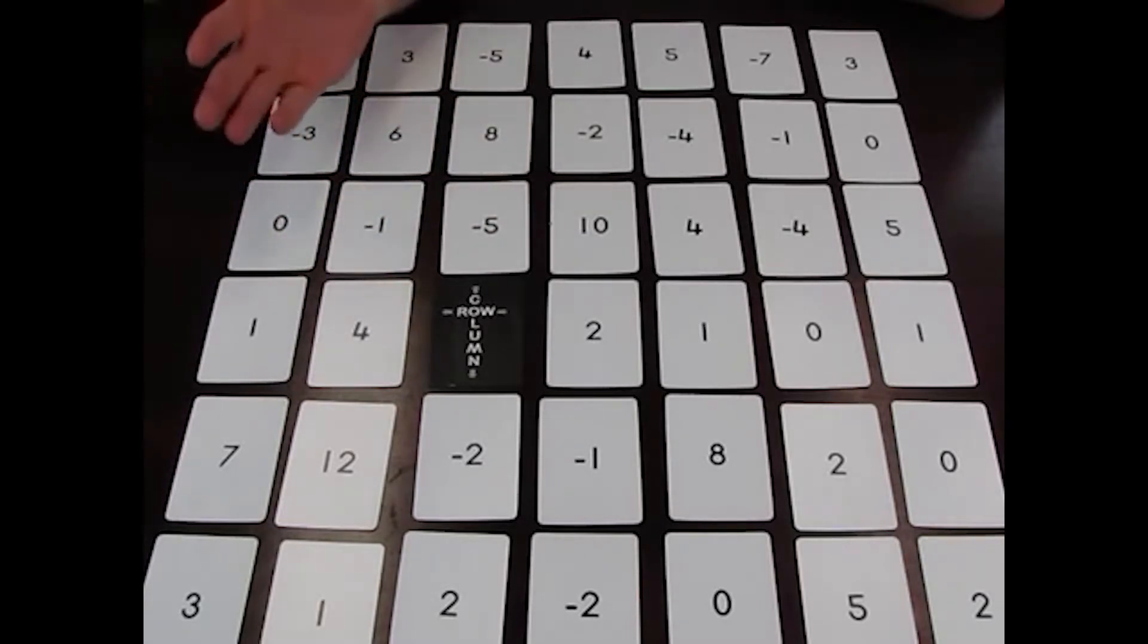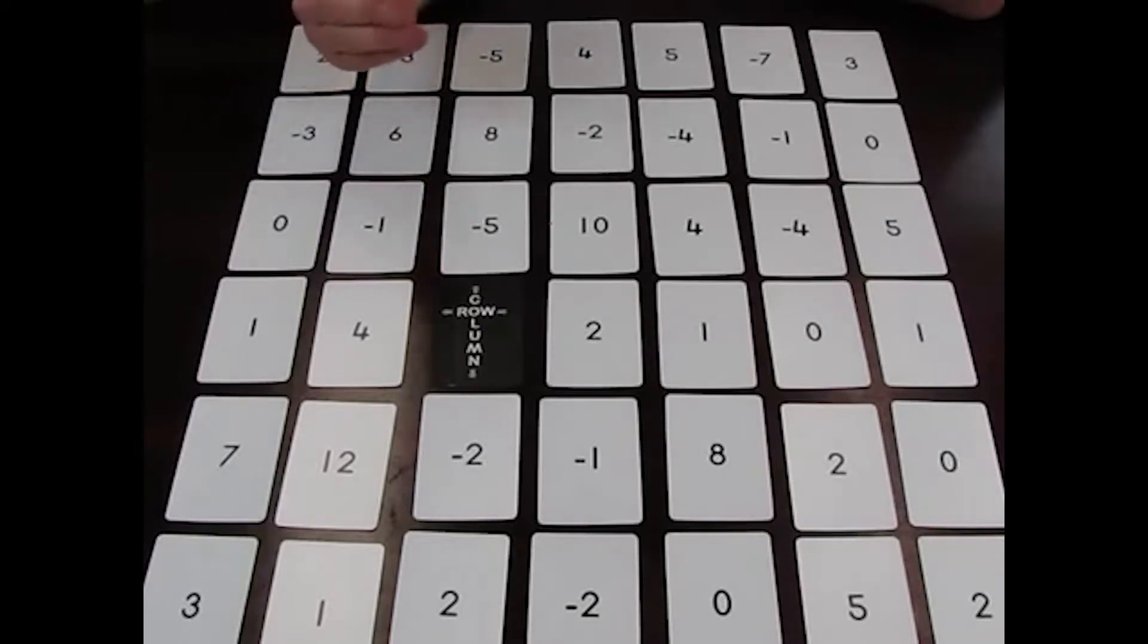One player takes on the role of the Row player, and the other one is the Column player. Or you could play pairs of players versus pairs of players. Once you choose whether you are either the Row or the Column, for the entire game you are playing Rows or Columns.